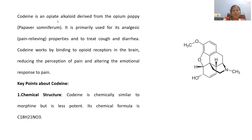Codeine is an opiate alkaloid derived from the opium poppy. From the opium poppy, so many alkaloids will be extracted, and among all, one of the components is codeine. Opium is scientifically designated as Papaver somniferum, from which codeine will be extracted — being a natural product extracted from a natural source. It is primarily used for its analgesic properties.